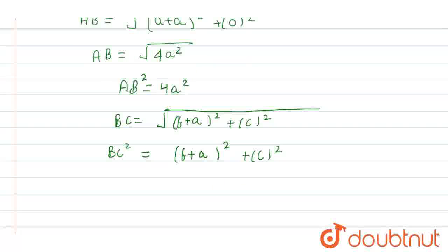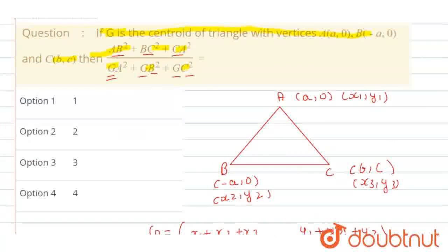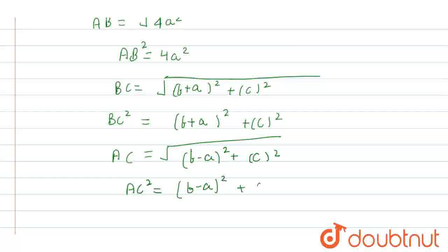Similarly, we will find the length of AC. A is (a, 0) and C is (b, c), so AC = √((b − a)² + c²). Therefore AC² = (b − a)² + c².